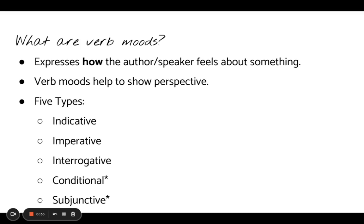So to start, you might be thinking: what the heck even are verb moods? Verb moods are basically how a verb expresses the way the author or speaker feels about something. Verb moods are used to show perspective in our writing or in our speaking, and there are five types: the indicative mood, the imperative mood, the interrogative mood, the conditional mood, and the subjunctive mood.